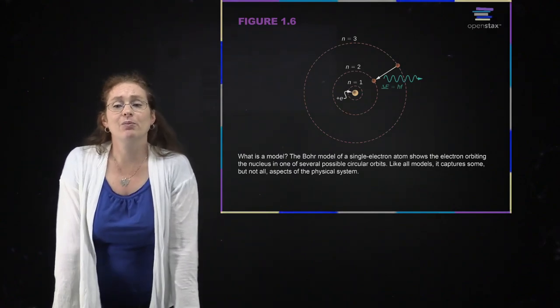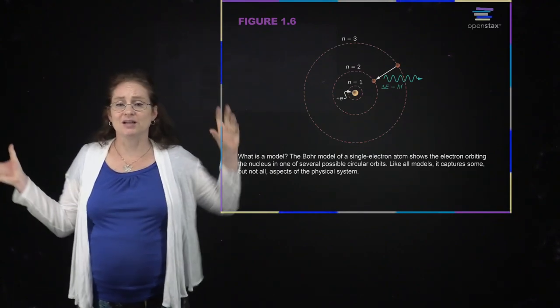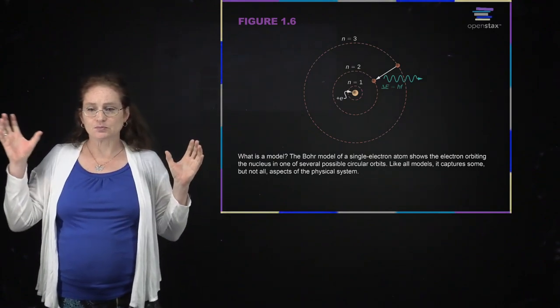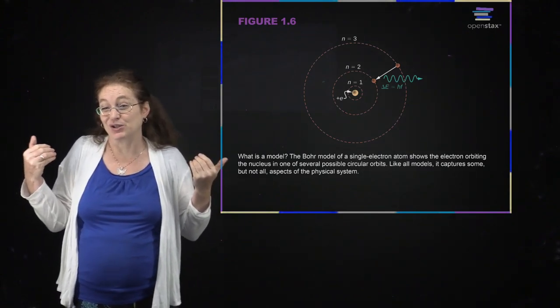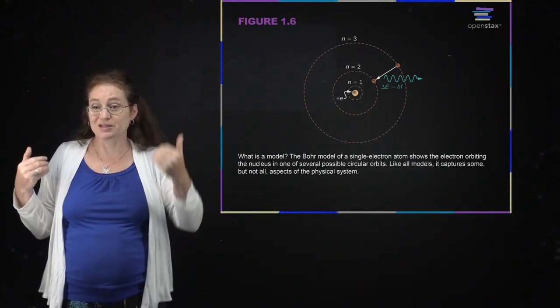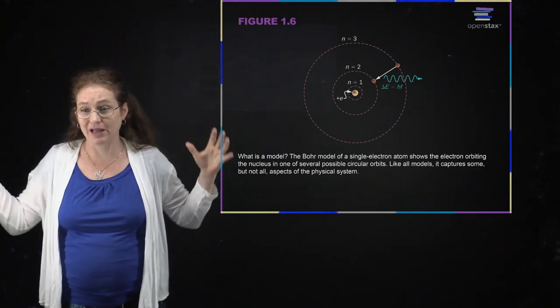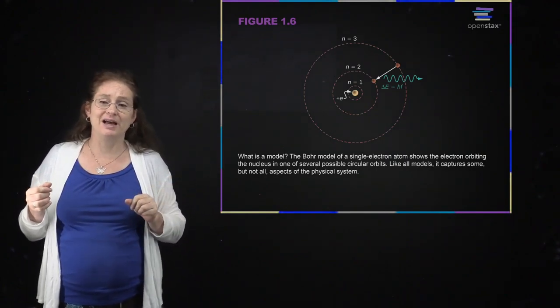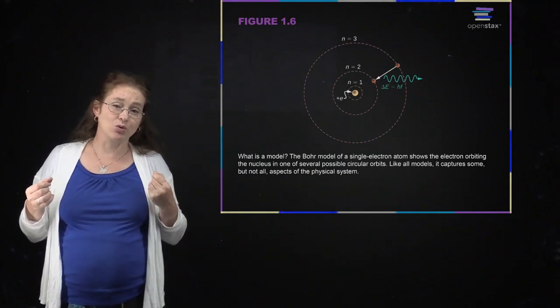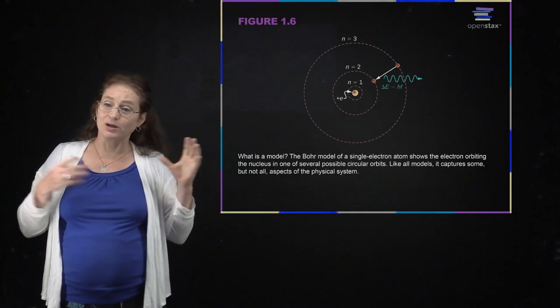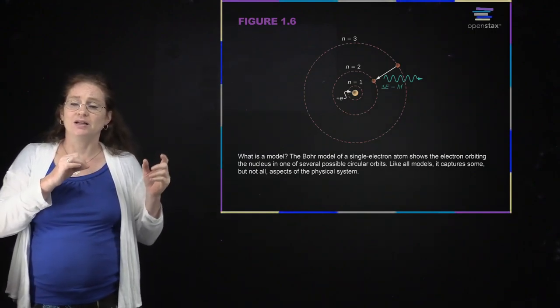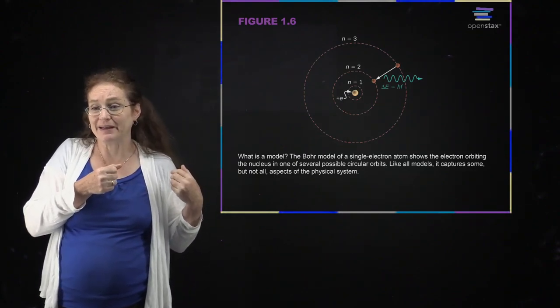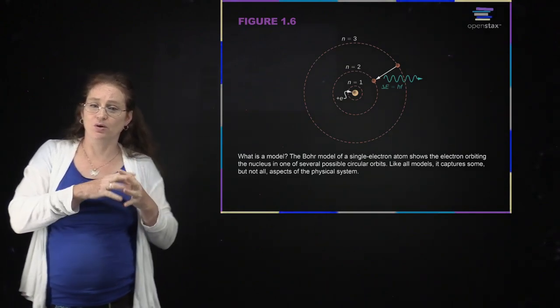The Bohr model of the atom envisions an atom as being a central nucleus with electrons orbiting around it. We know now that that model is actually wrong. It's been superseded by quantum mechanics, and you really have these diffuse clouds of electrons in something called a wave function, but the Bohr model of the atom is still extremely useful. We still teach the Bohr model because it is going to get you many of the right answers, and you can get things good to an order of magnitude, within a factor of 10. That's what the expression of an order of magnitude means.